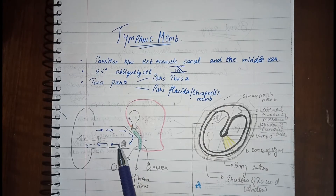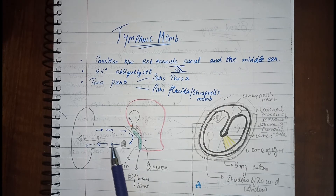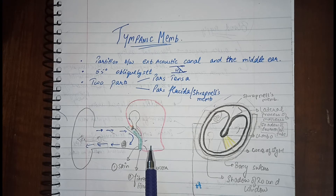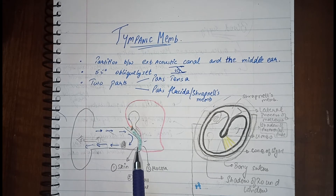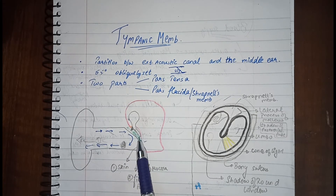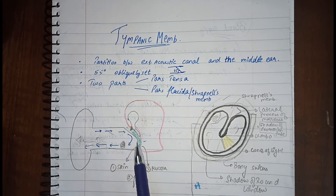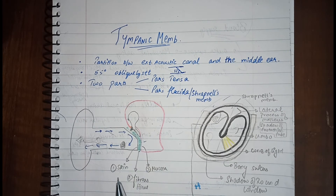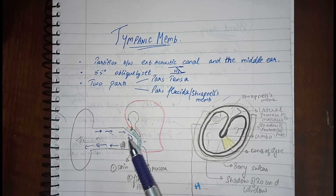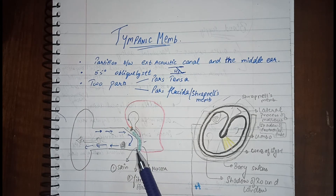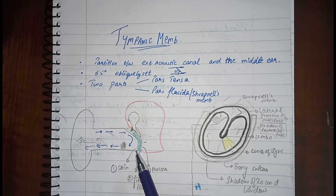The tympanic membrane is the partition between the external acoustic canal and the middle ear. We can also say that it forms the major part of the lateral wall of the middle ear. Regarding its position, it is inclined at an angle of 55 degrees with the external acoustic canal.